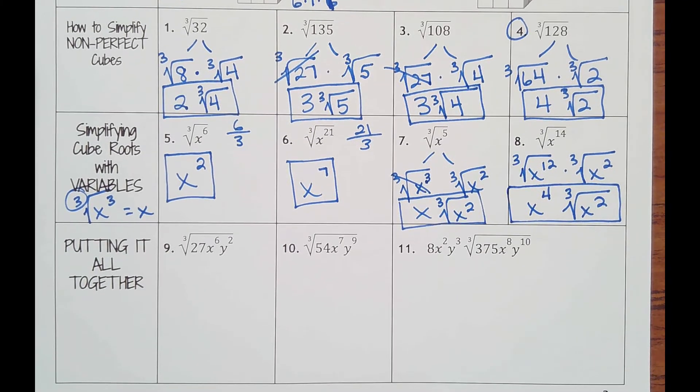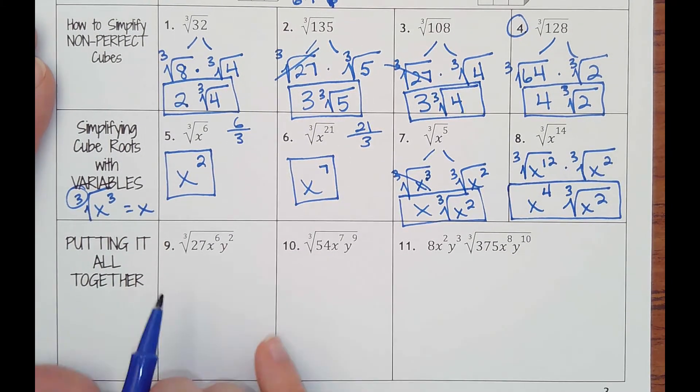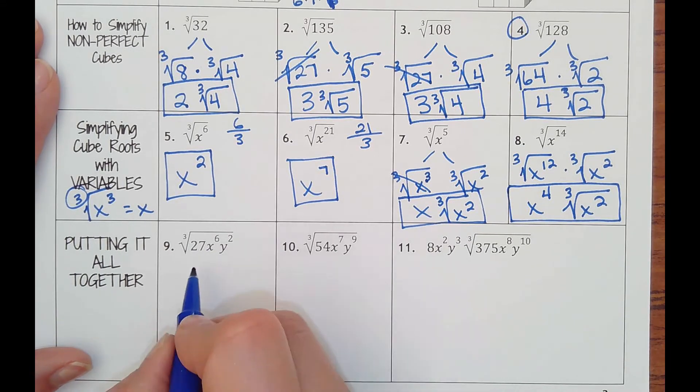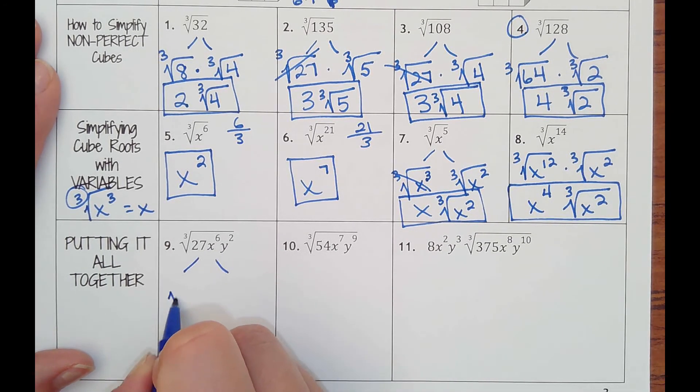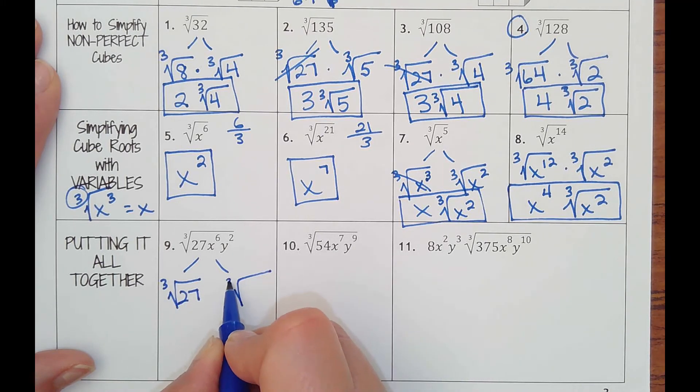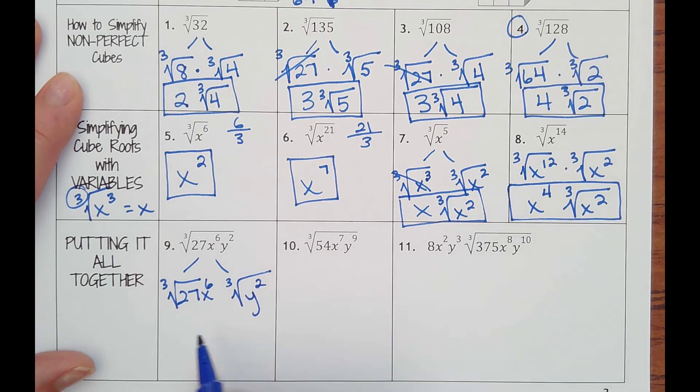Next we're just putting it all together in these algebraic cube roots. This would be cube root of 27 is a perfect cube. X to the sixth will be a perfect cube. Y squared is not, since it's not a multiple of three. Cube root of 27 is 3. 6 divided by 3 is x squared with a cube root of y squared left over.